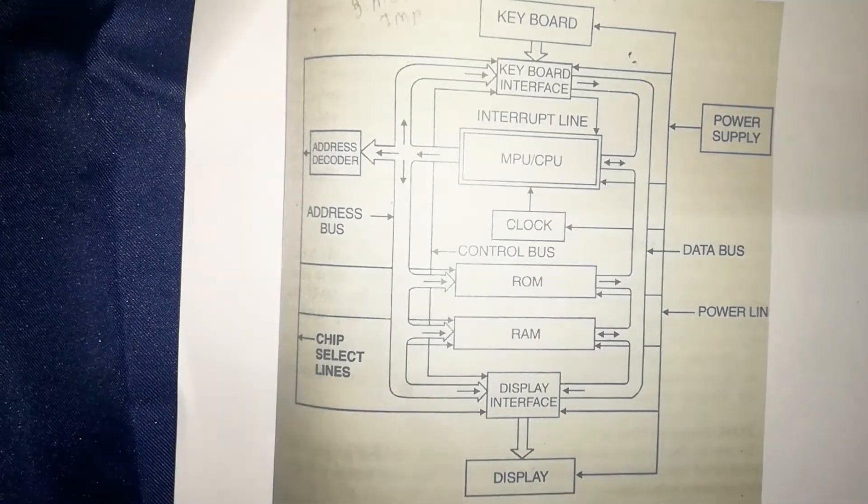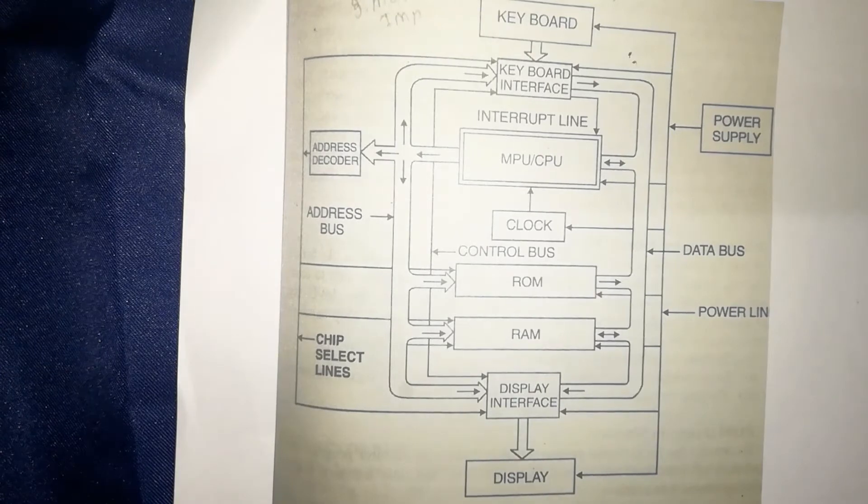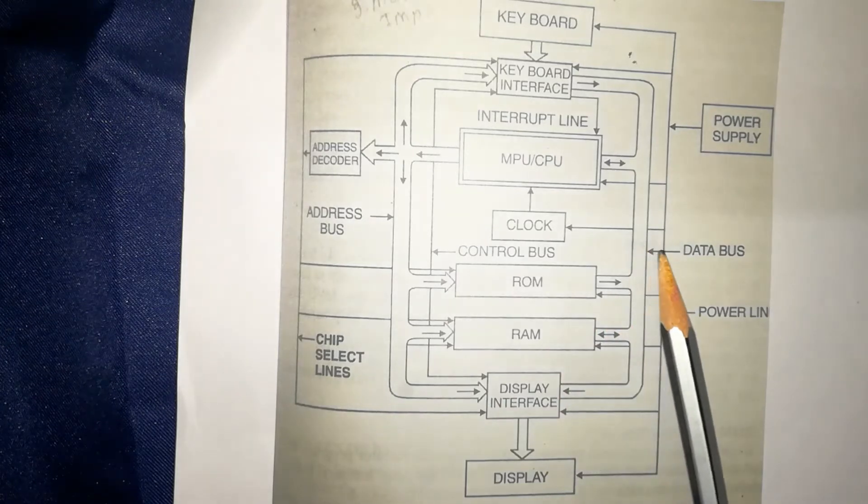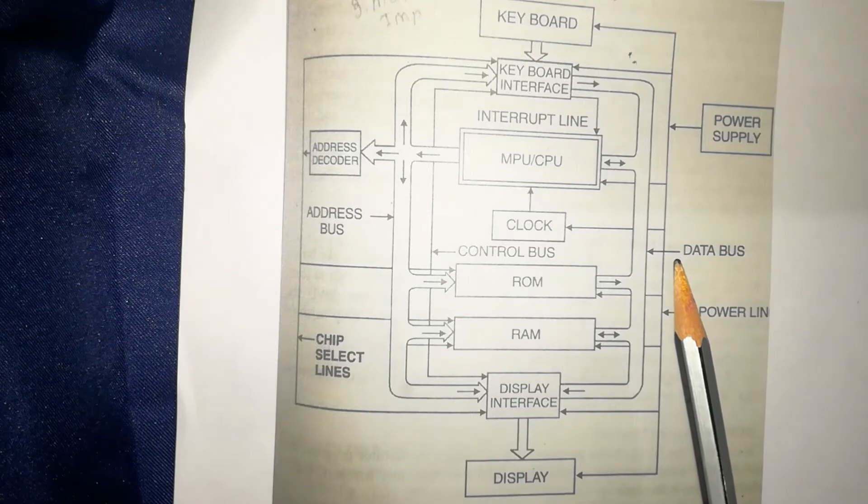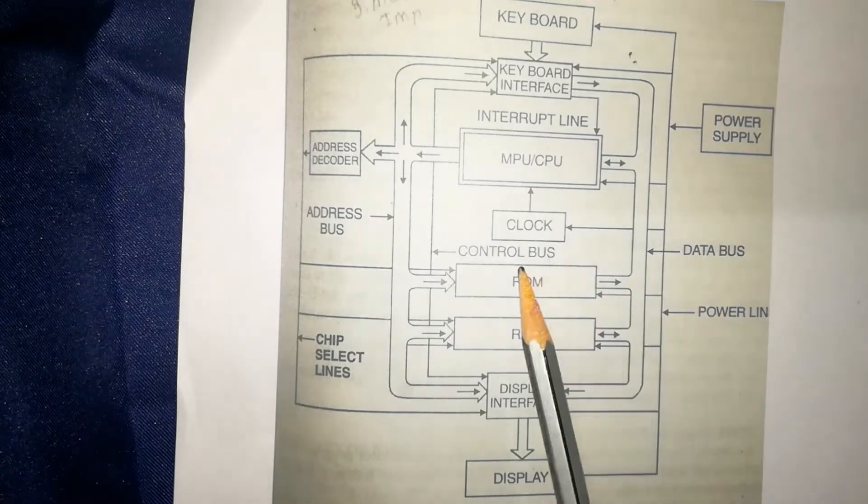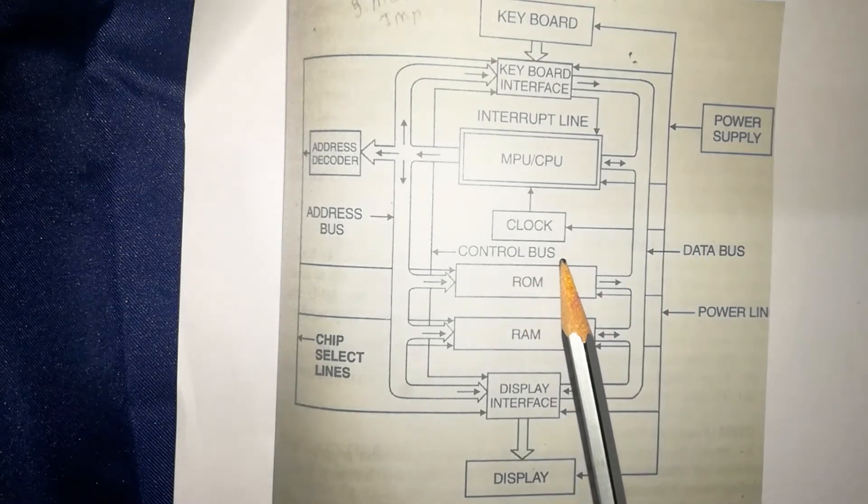We will see each of these blocks one by one. Very first is bus. A bus is a conducting line which carries electronic data. There are mainly three types of buses: address bus, data bus, and control bus.